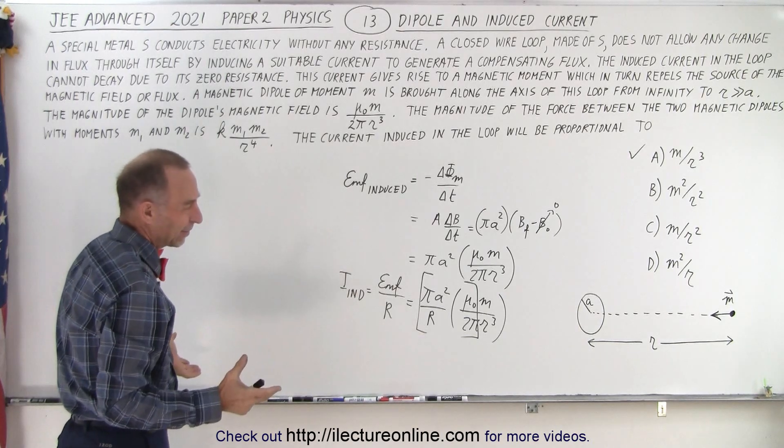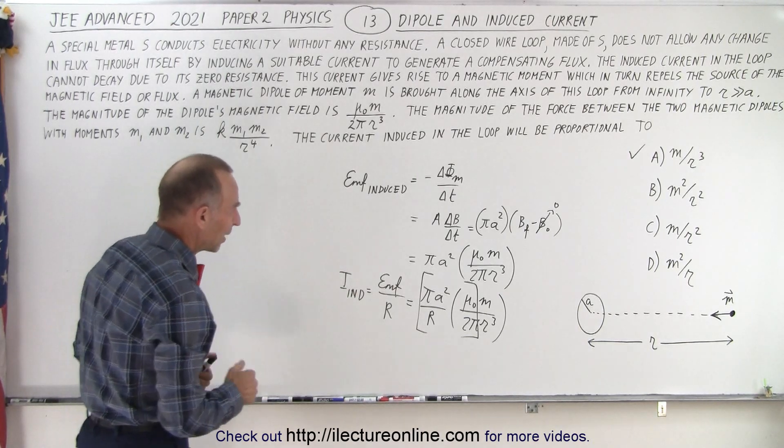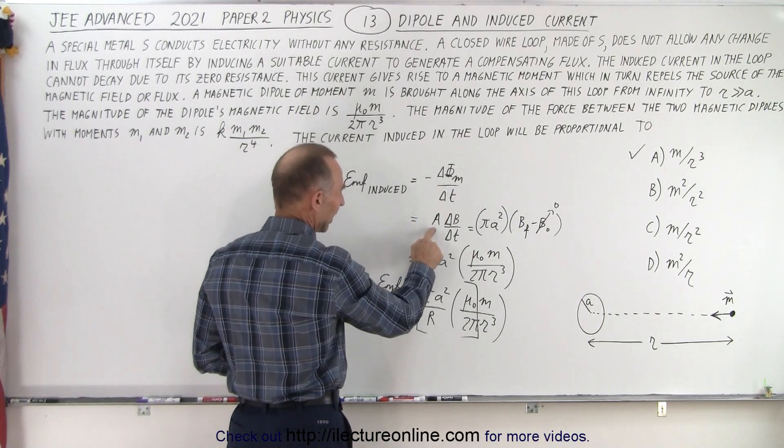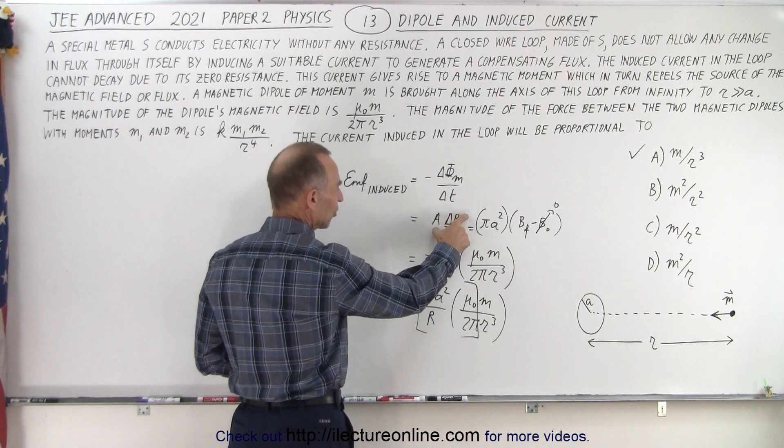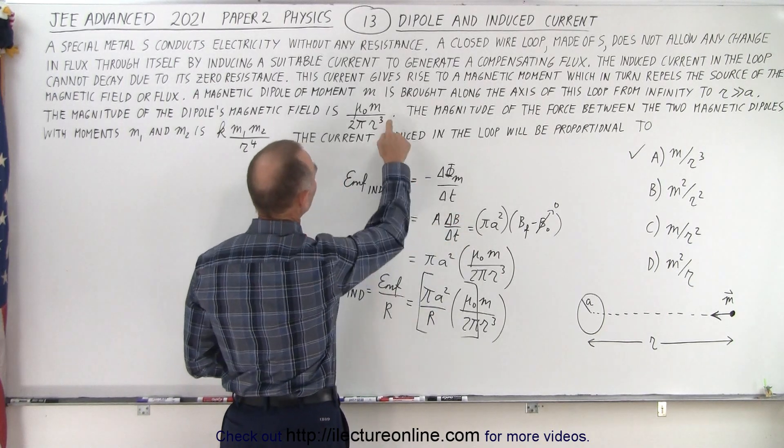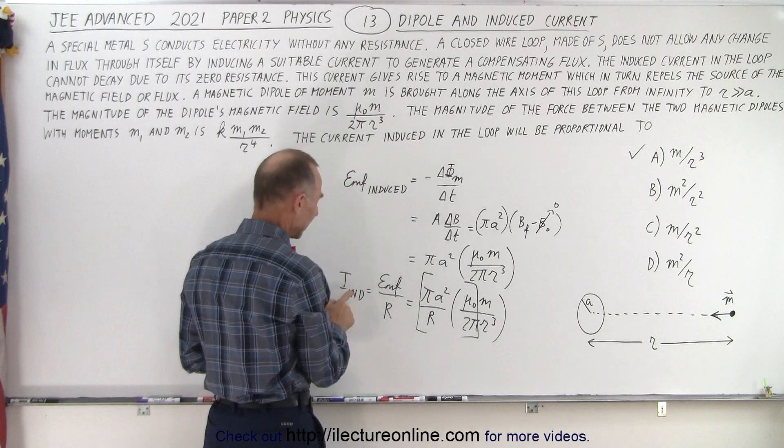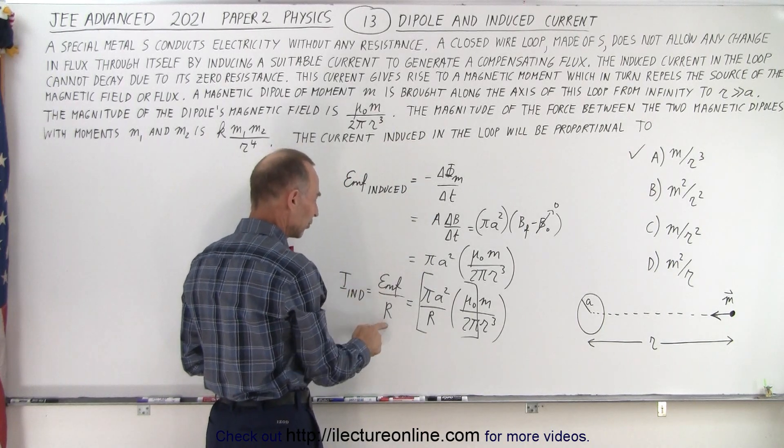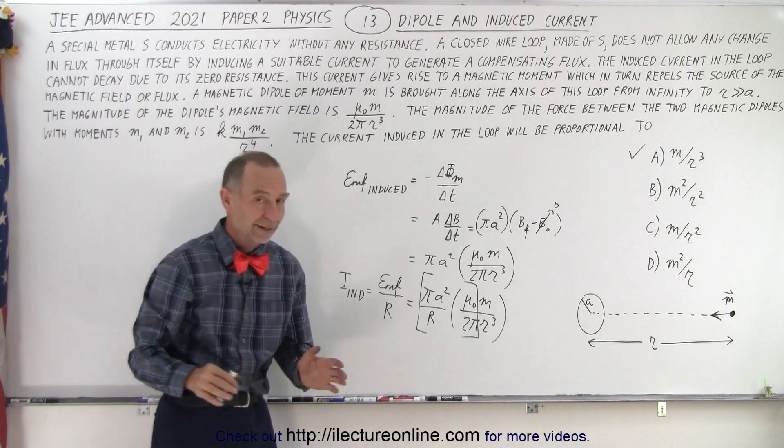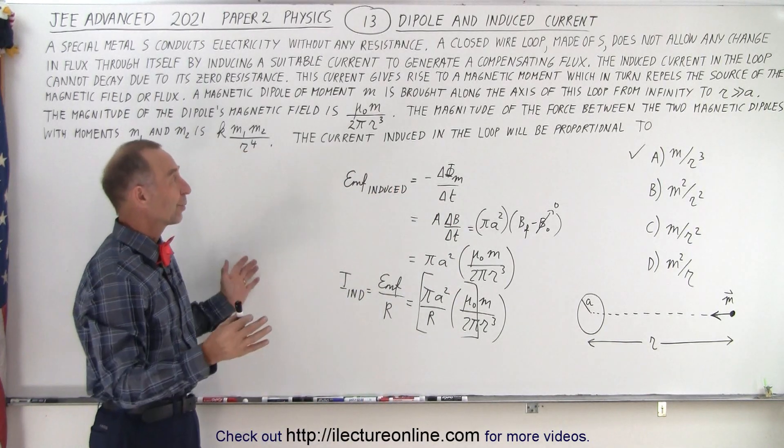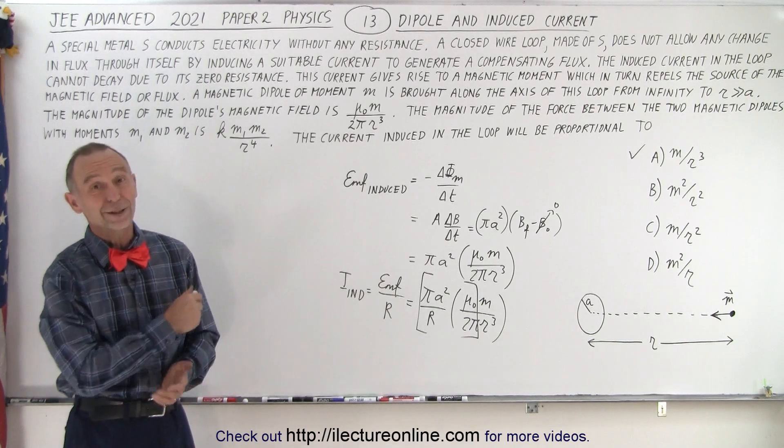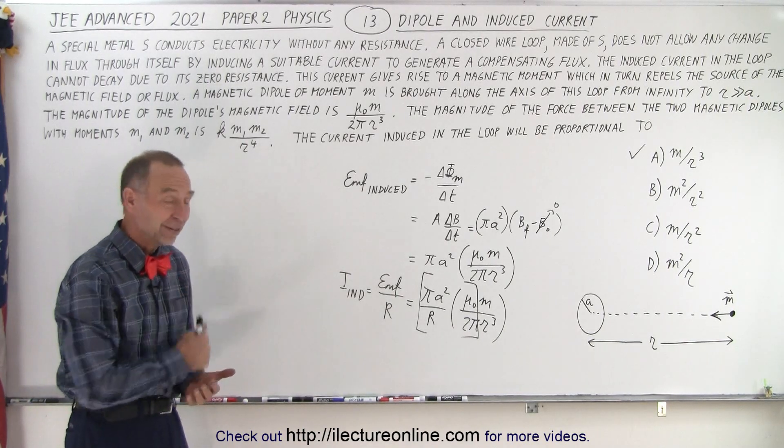But if you just keep to the basics and realize that EMF induced is equal to this, which essentially is the area of the loop times the change of the B field with respect to time, and we can assume that that's going to be equal to this quantity right here, and that I induced is simply EMF induced divided by R, and there goes the ratio. So it can be a one-minute problem once you realize what's going on, and of course, you spend at least two or three minutes reading the problem. But that is how it's done.